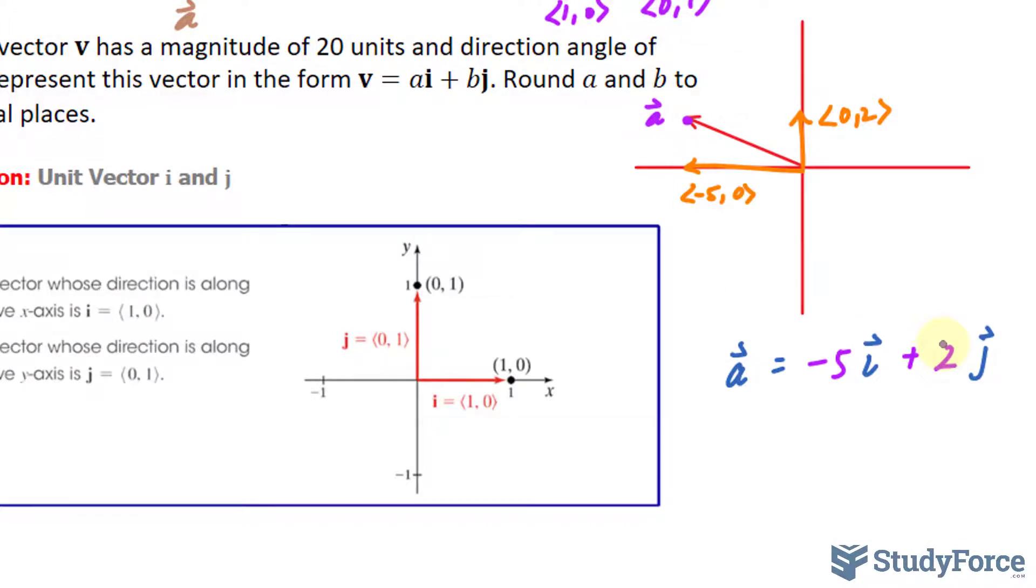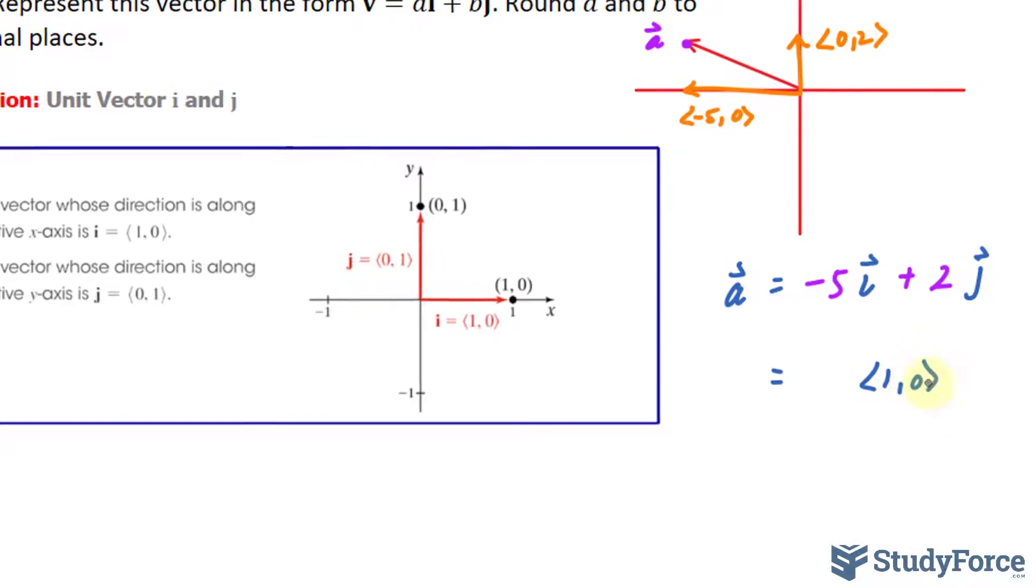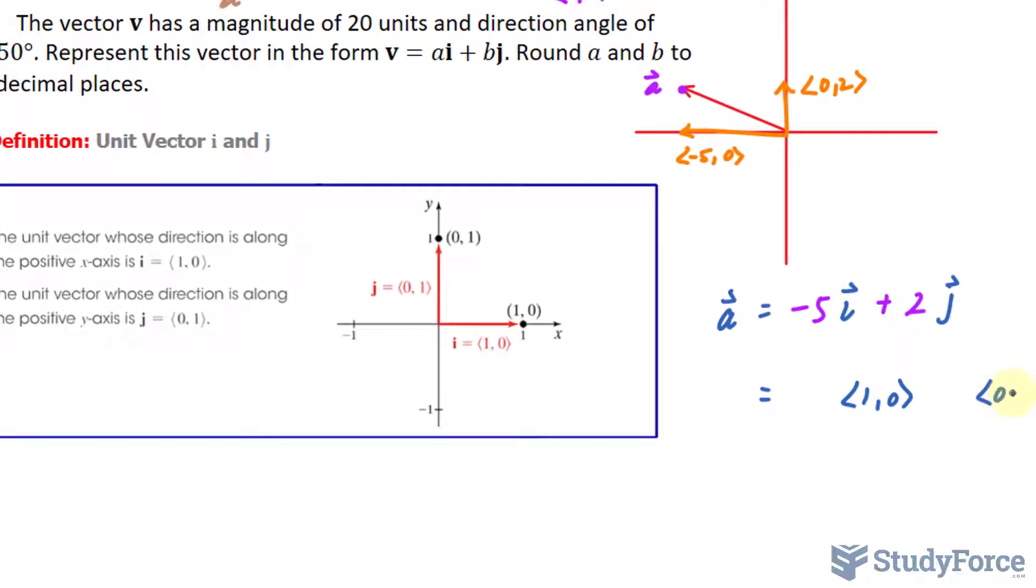And from here we can start to understand why i and j notation is used. Remember, i represents (1,0), and j represents (0,1). Now, if I write down -5 as the scalar, and positive 2 as the scalar,